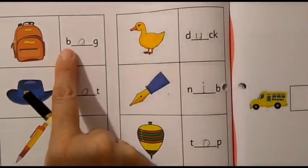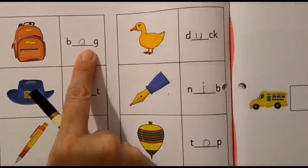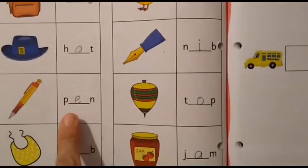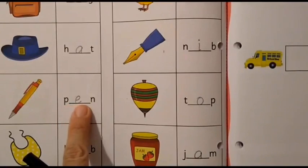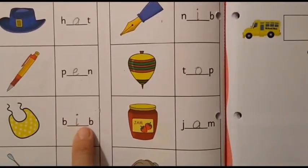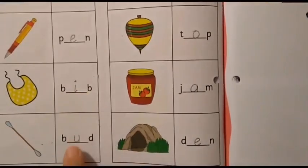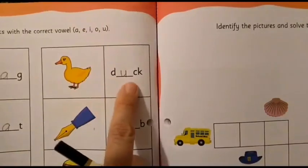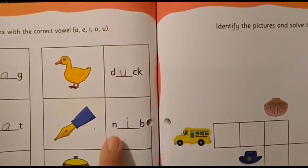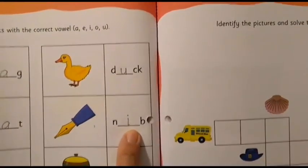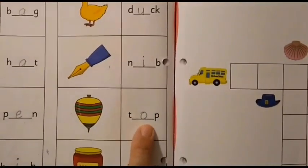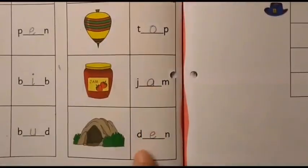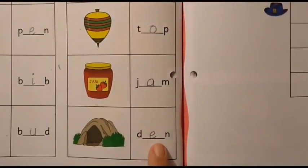Let's read the words. Bag. Bag. Hat. Hat. Pen. Pen. Bib. Bib. Bud. Bud. Duck. Duck. Nib. Nib. Top. Top. Jam. Jam. Den. Den.